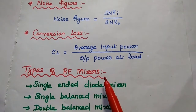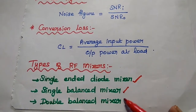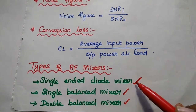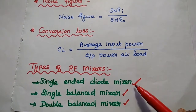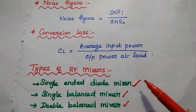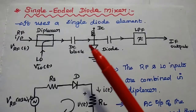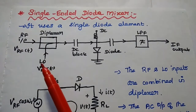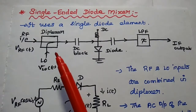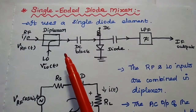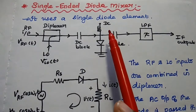The types of RF mixers are: single-ended diode mixer, single balanced mixer, and double balanced mixer. The single-ended diode mixer is also called an unbalanced mixer because only one diode is used, providing non-linearity. In the single-ended diode mixer, the RF input signal and the local oscillator signal are both combined in a diplexer, and the combined output is given to the diode, which is biased with a DC voltage.